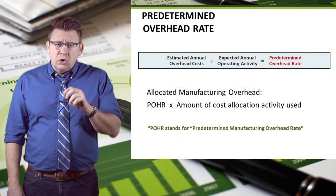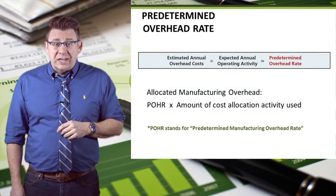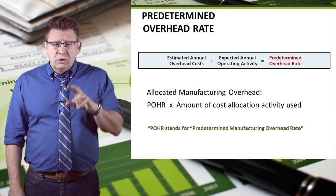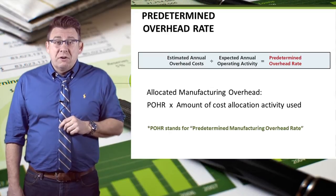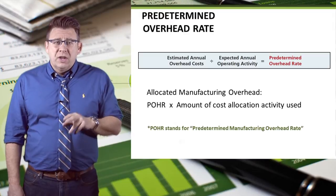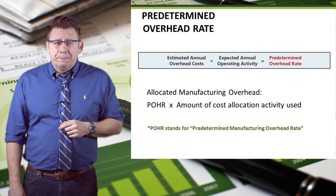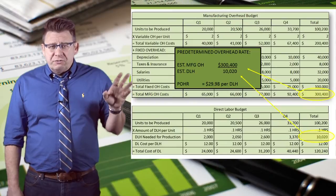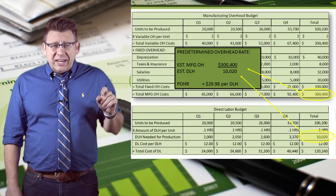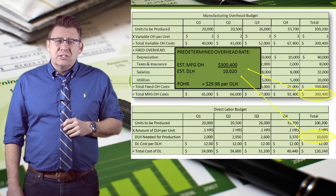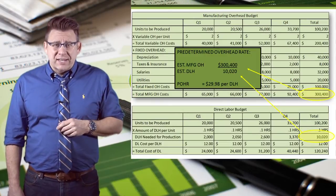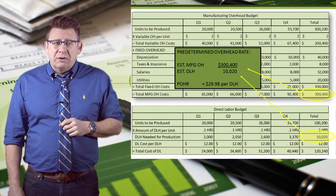Recall that we use the total budgeted Manufacturing Overhead costs when we determine a predetermined overhead rate. We will use the total direct labor hours from the direct labor budget in order to calculate the predetermined overhead rate per direct labor hour. By using total Manufacturing Overhead and dividing it by total direct labor hours, we can calculate a predetermined overhead rate of $29.98 per direct labor hour for this company.